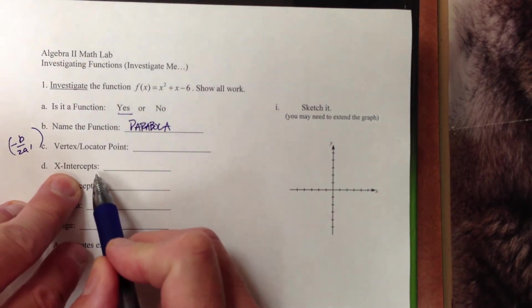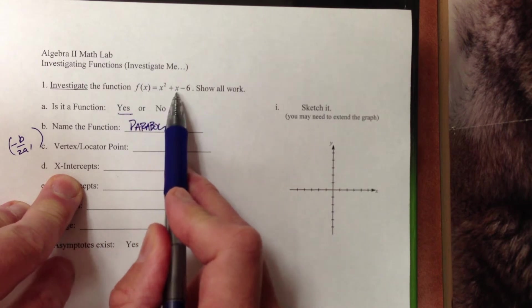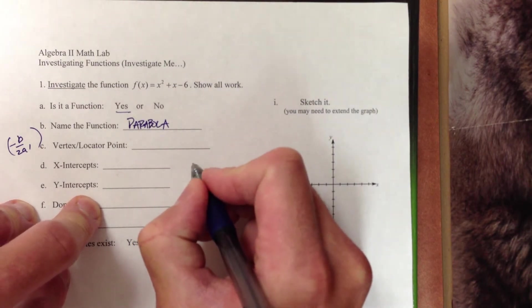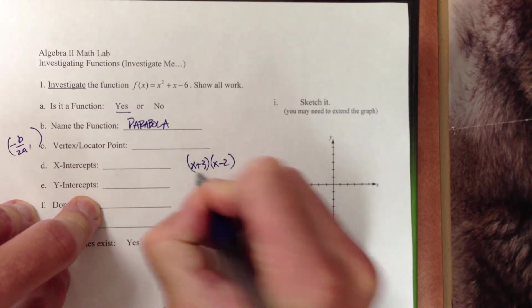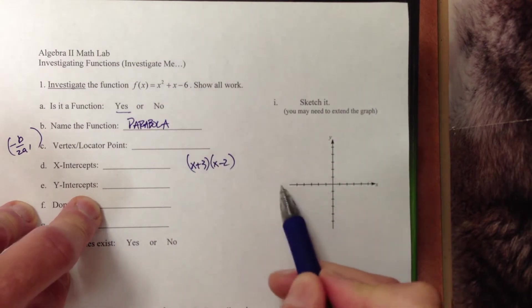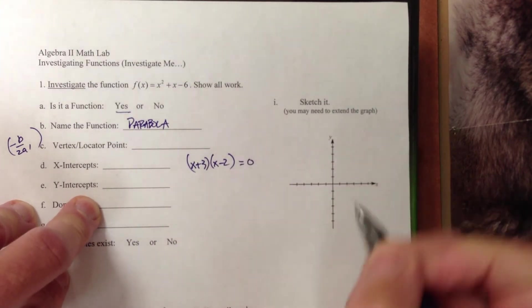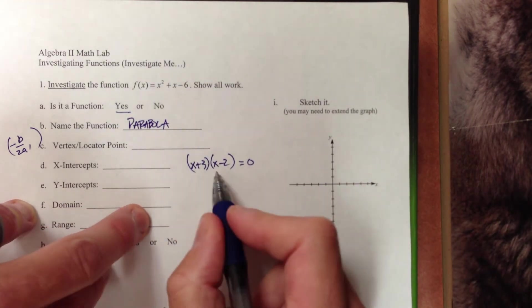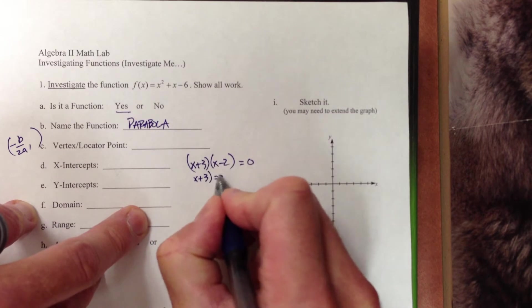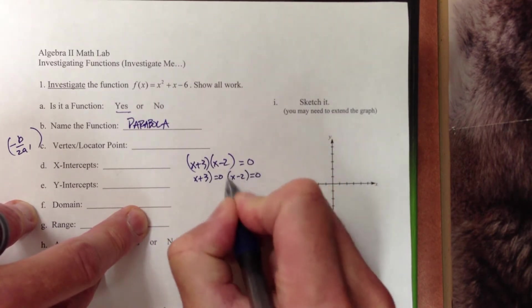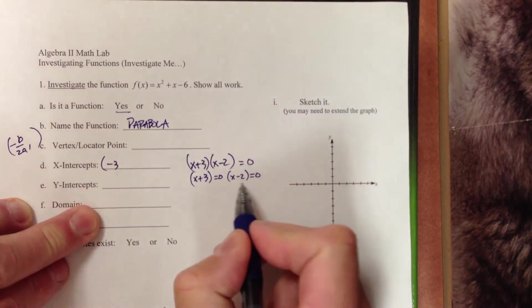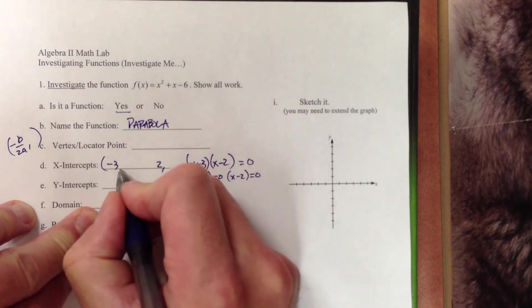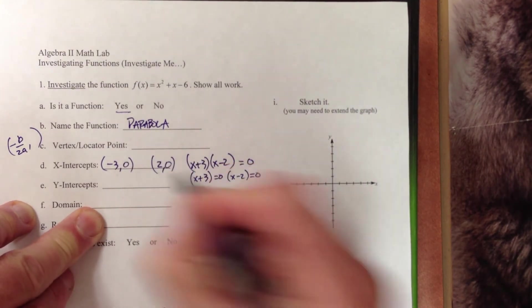So let's jump into our x-intercepts. We're going to factor this. The factors of negative 6 that give me a positive 1 would be positive 3 and a negative 2, so x plus 3, x minus 2. And we're looking for x-intercepts, so those have a y value of 0, which allows us to apply our zero product property. When we apply our zero product property, x plus 3 equals 0, x minus 2 equals 0. Solving both of those equations gives us an x value of negative 3 and an x value of positive 2. Those are both points, so we're going to substitute back in that y value of 0.